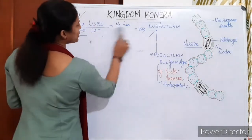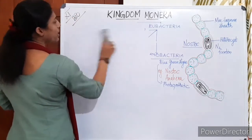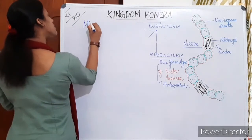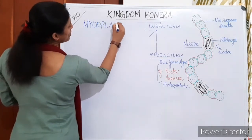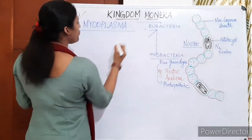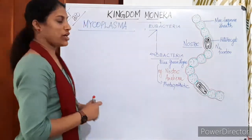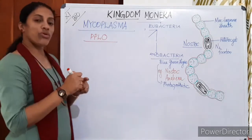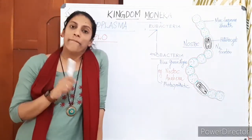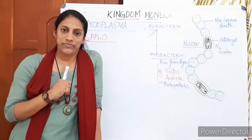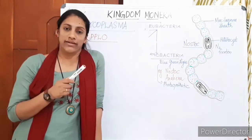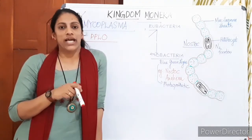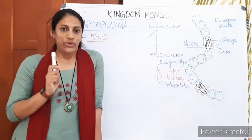Another small topic under Kingdom Monera is mycoplasma. These are considered the smallest organisms in nature. During the time of discovery they were named PPLO — Pleuro Pneumonia Like Organisms — because they first appeared to scientists as pneumonia-causing organisms resembling pleuropneumonia bacteria.